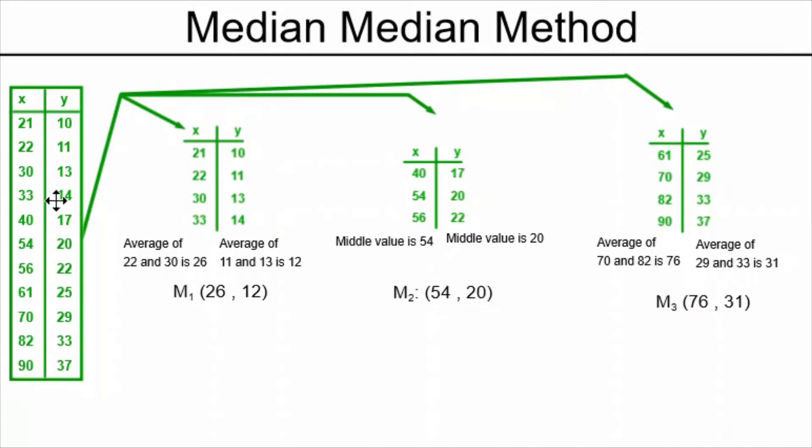Then we divide the table into three smaller tables, making the smaller tables as close to the same size as possible. In this case, because there were 11 points, we ended up with two tables with four points and one table with three. And we have to follow the rule that the different size table has to be in the middle.